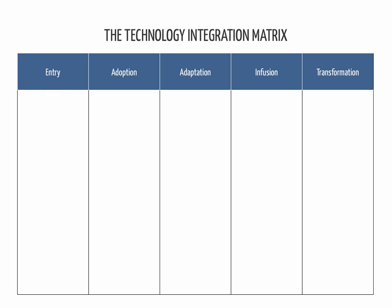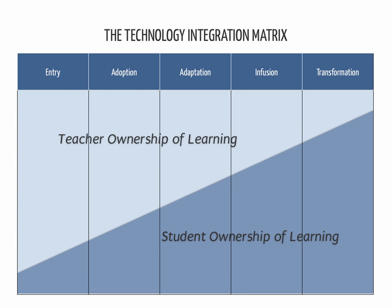As we move toward the right on the TIM, we see some general differences in the way technology is used. The most important difference is that, in general, as we move toward the right, we see greater student ownership of learning. We expect an entry-level lesson to be teacher-focused and teacher-driven, while a transformation-level lesson is much more likely to be student-centered, with students making meaningful and informed decisions and strategic choices about the way technology is used.